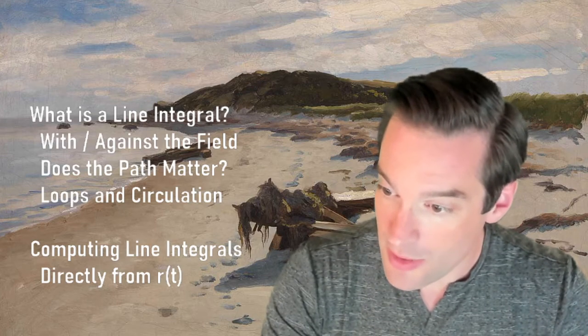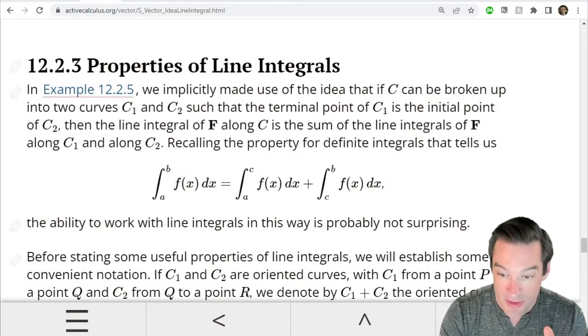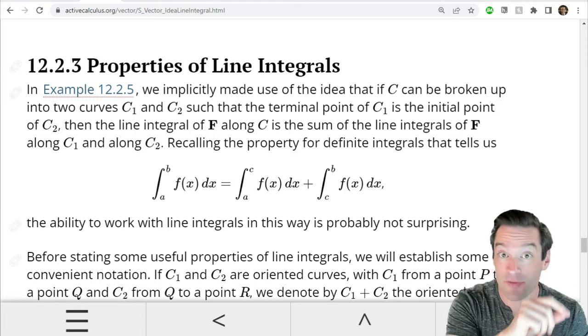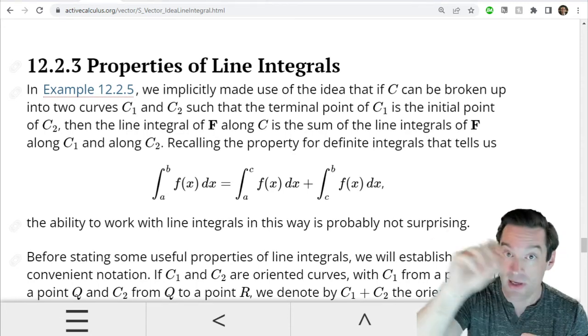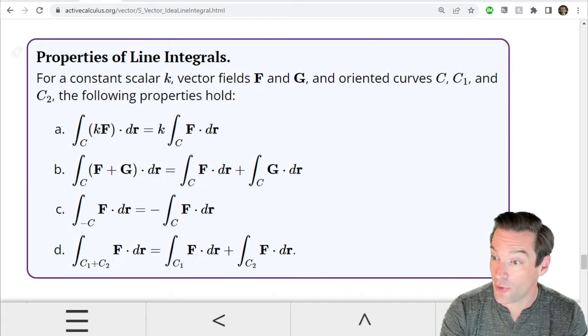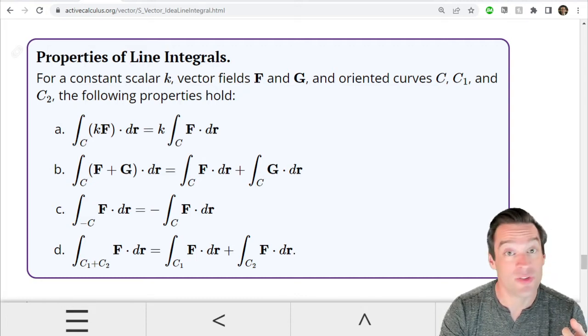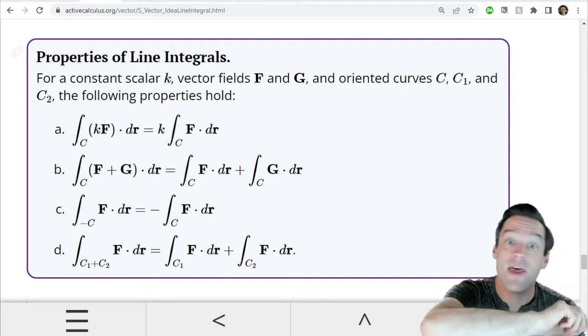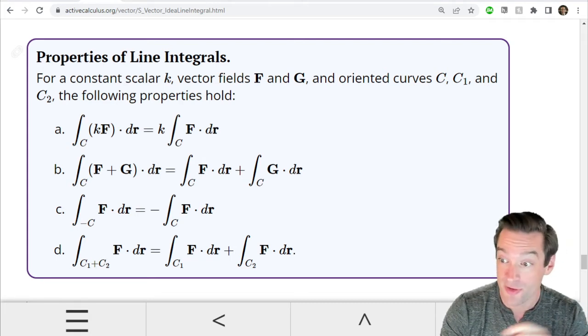So to get started, the first thing we observe about line integrals is that if I have two paths that sort of connect up, so if I go from point A to point B and then from point B to point C, the total line integral along that whole journey is just the sum of the integral from point A to point B added to the integral from point B to point C. So that's what we mean when we say we're going to add two curves together.